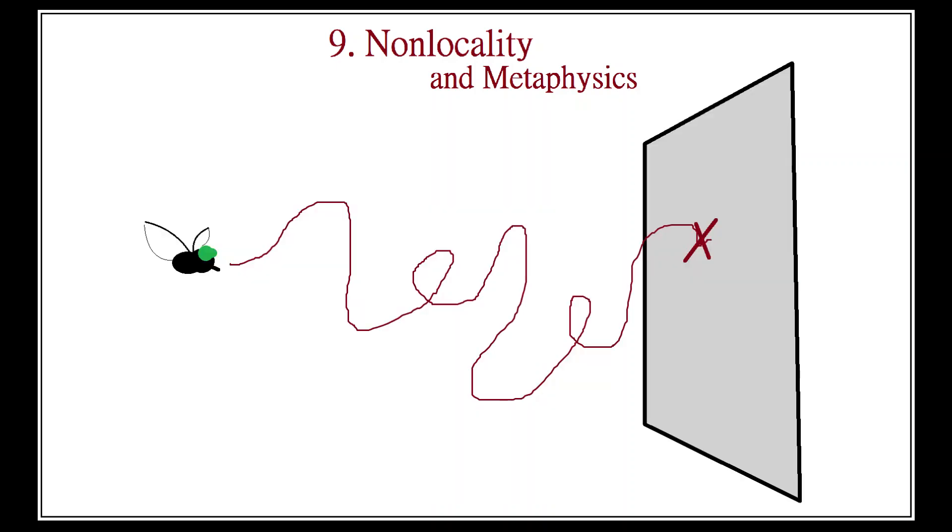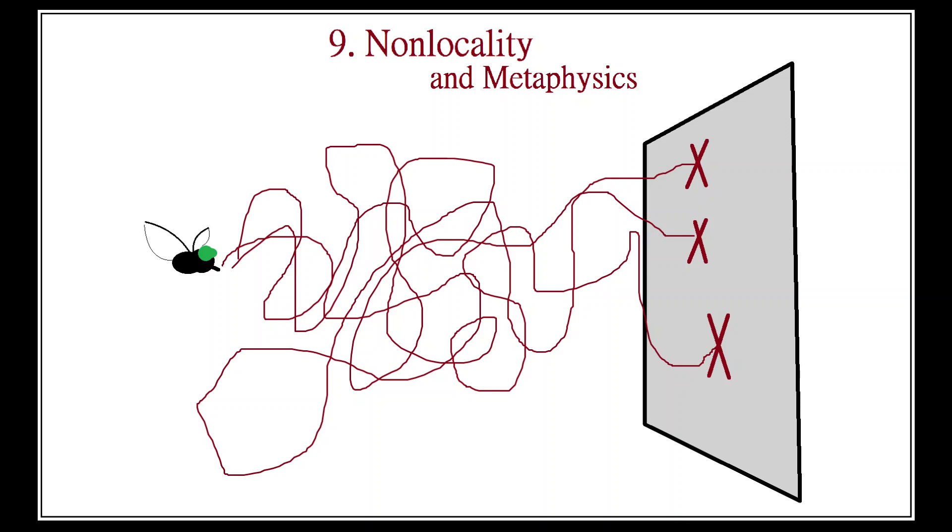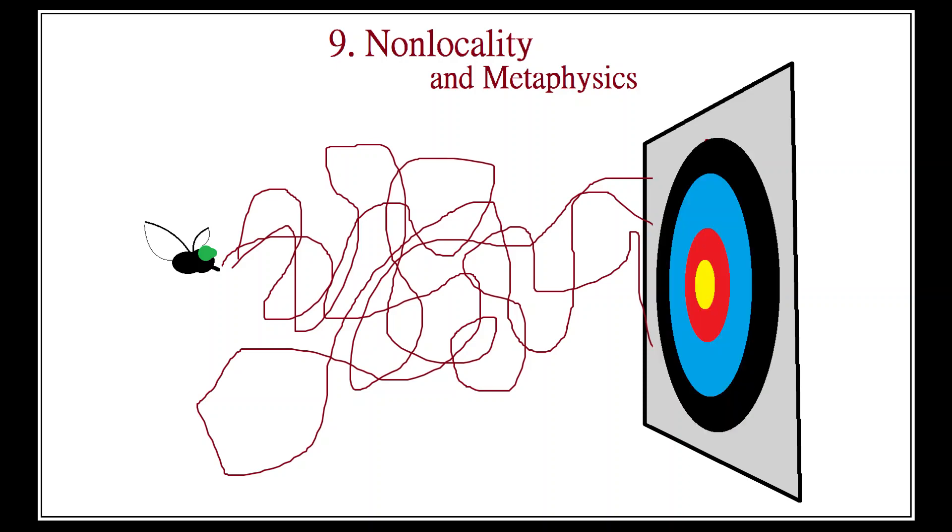Imagine a horsefly weaving drunkenly down a hallway towards a wall of flypaper. Its flight path is so erratic and seemingly nonsensical that we cannot know for sure where on the flypaper it will hit. All we can know is the probability distribution.